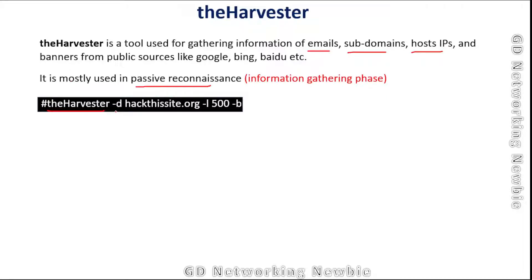The basic syntax is: we give the tool name, then use the option minus D to specify the target domain URL — that can be any dot com address. With minus L we limit the search results, the default is 500, but we can set it to 200, 100, or whatever we want.